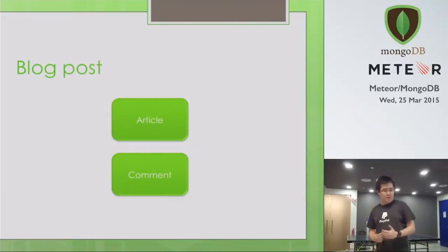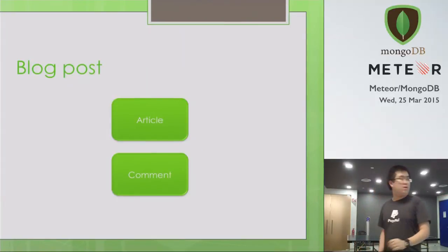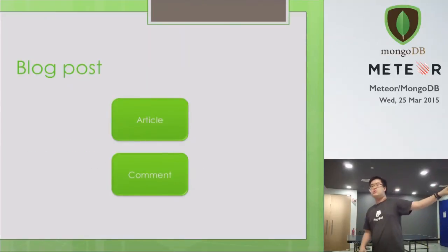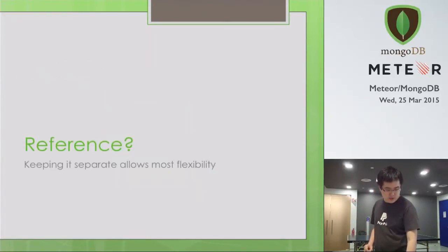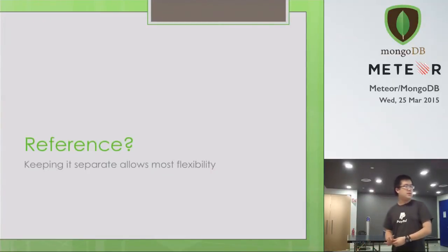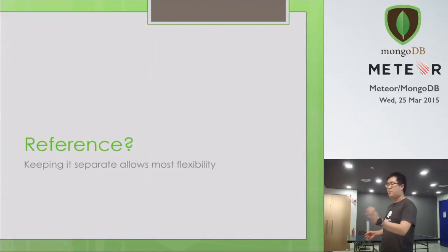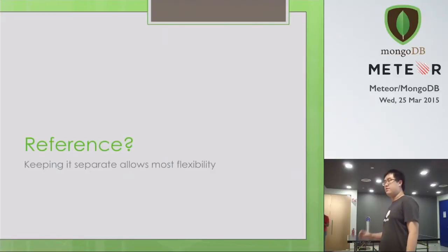In a blog post, when your comment is outside the article, it's more of a reference kind of model because you need the comments to refer to which article they belong to. One of the key benefits of using references is that it allows you more flexibility when you query the objects — you can filter easily. Whereas if you put it in an array, MongoDB doesn't really have many query operators to do things the way you like. For example, a regex search on an array will be very expensive because MongoDB doesn't index arrays very well. So references give you more flexibility.